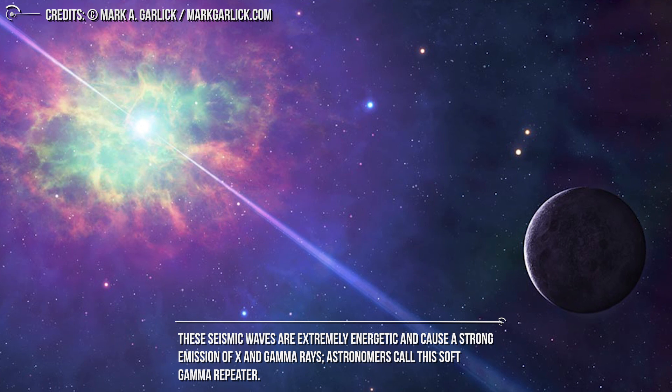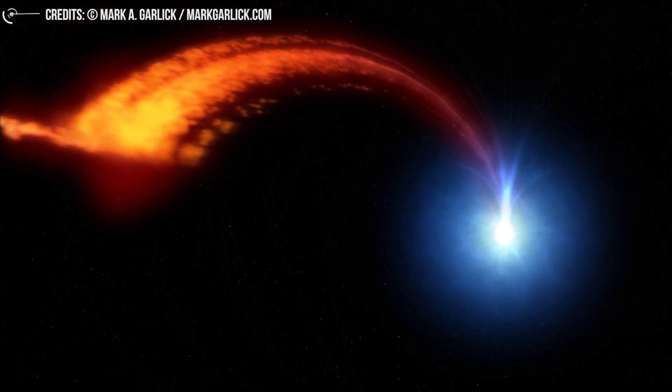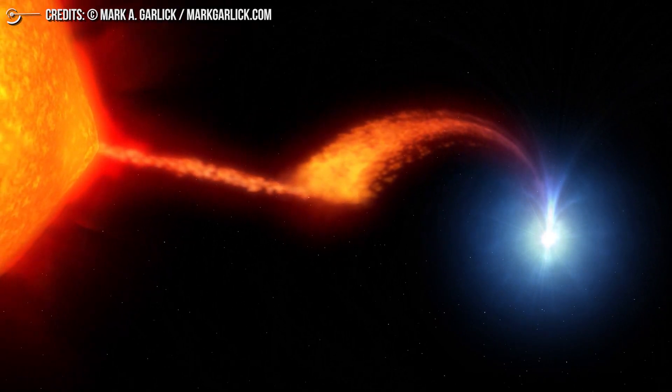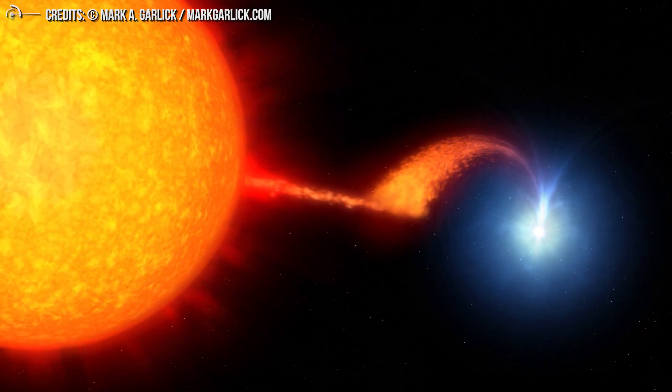Astronomers call this soft gamma repeater. The active life of a magnetar is quite short. The strong magnetic fields decay after about 10,000 years, after which both the activity and the emission of X-rays cease. To date, about 30 magnetars are known.